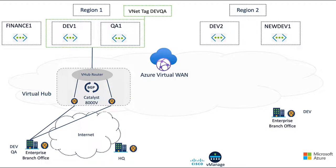Furthermore, we can inject a default route from our fabric to the virtual hub. This will direct VNet-to-Internet traffic across secure encrypted IPsec tunnels to a select SD-WAN site, where the traffic can be inspected using the on-premise security infrastructure. This also provides for inspection on the return path.